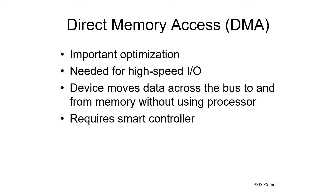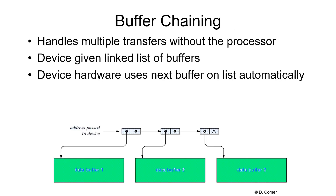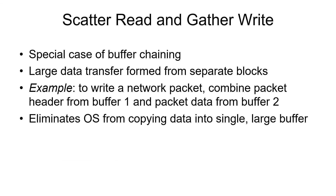Most high-speed I/O controllers use direct memory access, or DMA, which allows high-speed movement of data between the I/O controller and memory. Some devices do buffer chaining — instead of specifying an individual memory address for where data is to be stored, you can give blocks of memory addresses: put some information here, some in another location, and the rest in a third location. So in this example, there is a linked list of addresses given to the I/O controller, which puts the first so many bytes into data buffer 1, the next so many bytes into buffer 2, and the remainder into buffer 3, putting the data into different areas in memory. This is called a scatter read, or if writing from multiple buffers, a gather write.